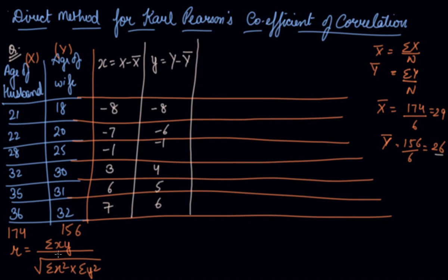Now we have to find out x into y. So small x into small y: 8 times 8 is 64, 7 times 6 is 42, 1 into 1 is 1, then 12, 30, and 42. And summation xy is 191.